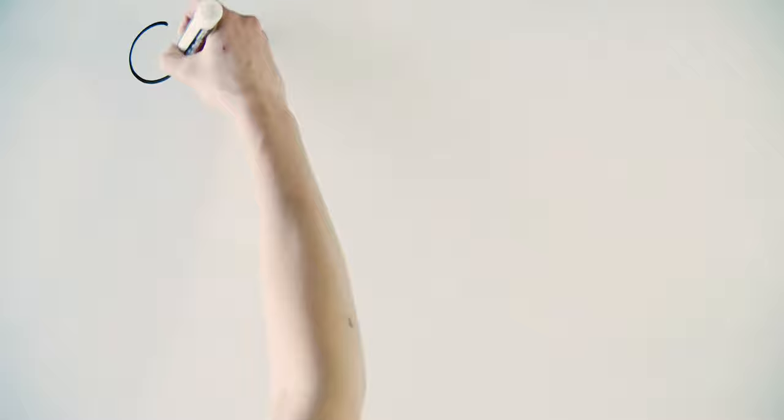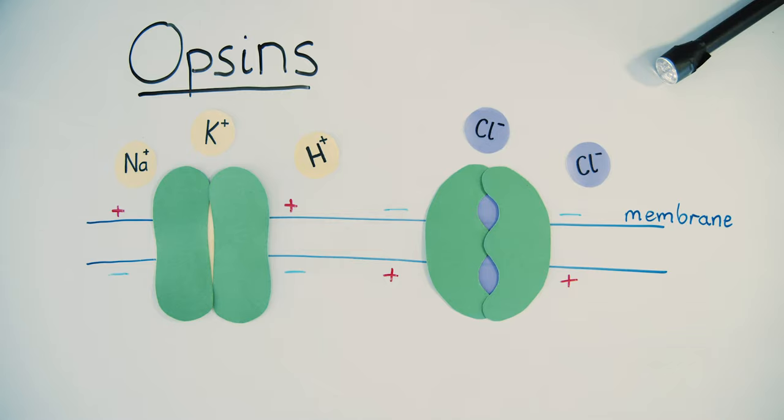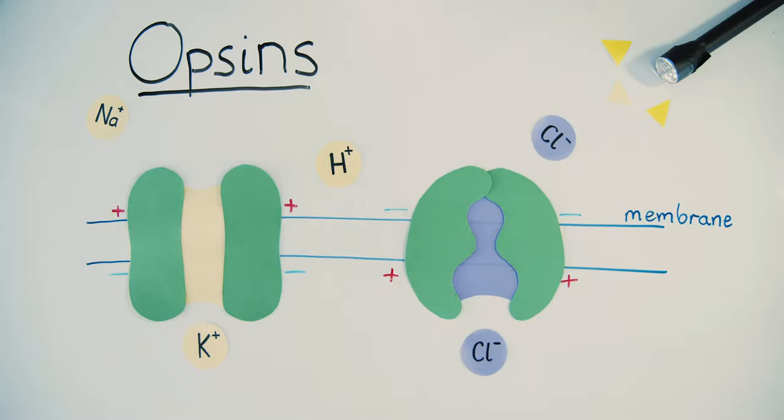The key lies in a group of membrane proteins called opsins. Opsins are light-sensitive receptors that convert light into electrical signals by letting charged particles, called ions, cross the membrane as either channels or pumps.